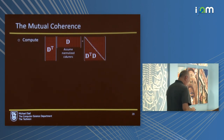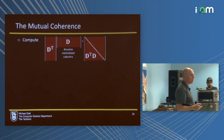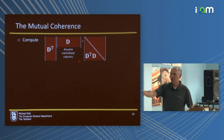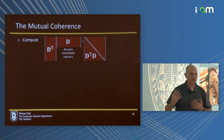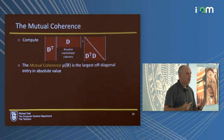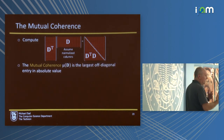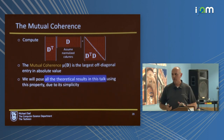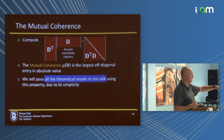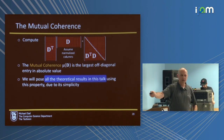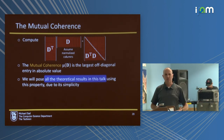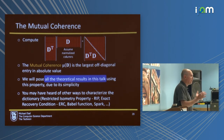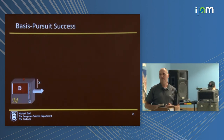Let me show you a typical theorem. To do that I need to introduce a concept called the mutual coherence. Take the dictionary — assume columns are normalized — and compute the Gram matrix: the inner products of all atoms with themselves. The mutual coherence is the maximal absolute inner product between two different atoms. This is mu. The smaller, the better. I will present a series of theoretical results all based on the coherence. Other measures exist — RIP, exact recovery conditions, spark, bubble function — but I won't mention them.